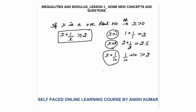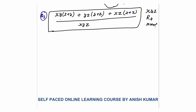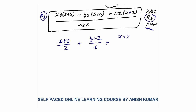Question 3: Find the minimum value of [xy(x+y) + yz(y+z) + xz(x+z)] / xyz, where x, y, z are positive real numbers. Dividing through, the expression simplifies: xy and x cancel, giving (x+y)/z + (y+z)/x + (x+z)/y, which further expands to x/z + y/z + y/x + z/x + x/y + z/y.